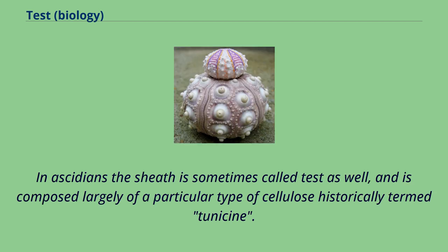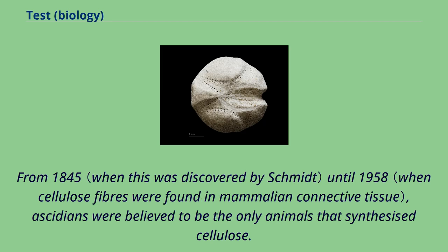In ascidians, the sheath is sometimes called a test as well, and is composed largely of a particular type of cellulose historically termed tunicine. From 1845 until 1958, ascidians were believed to be the only animals that synthesized cellulose.